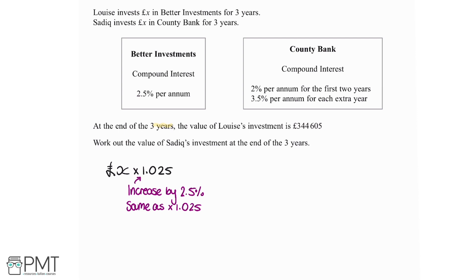In the third year, we take all of that money and multiply it by 1.025 again to get the result. So after the first year we have the original money and the interest, and we want to get 2.5% on top of all of that money. Multiplying again by 1.025 gives the result after two years, and multiplying again by 1.025 gives the result after three years. We're told that Louise's investment after three years is £344,605, so we know this expression equals £344,605.